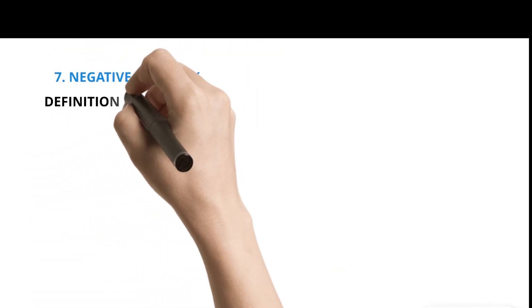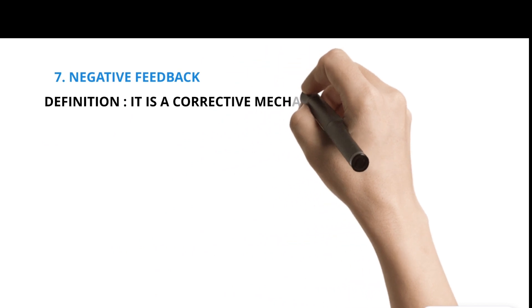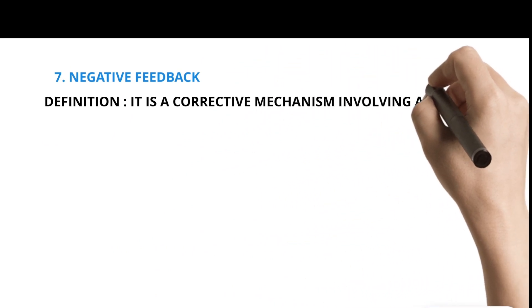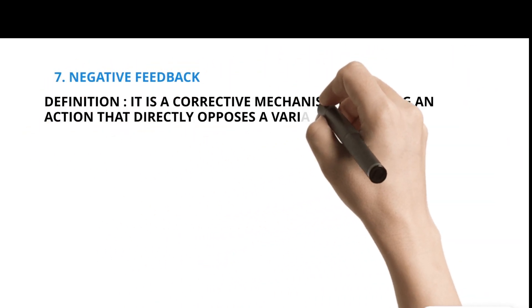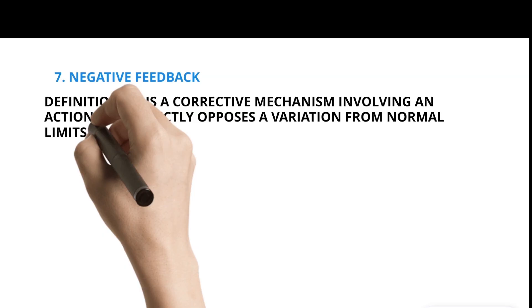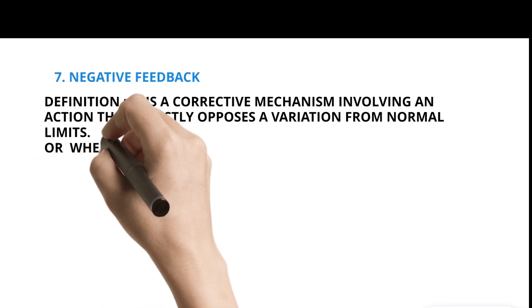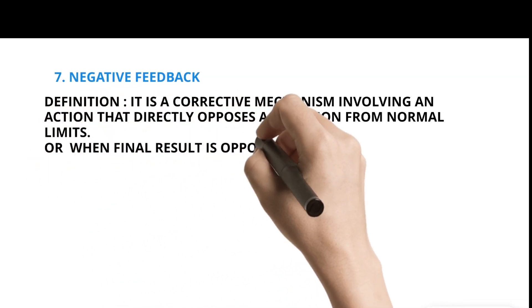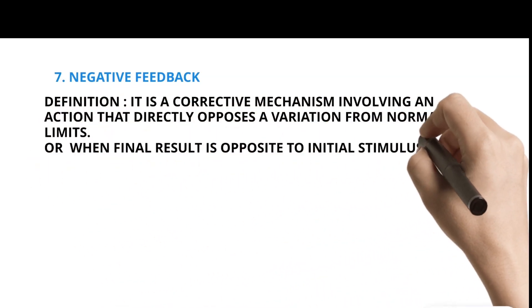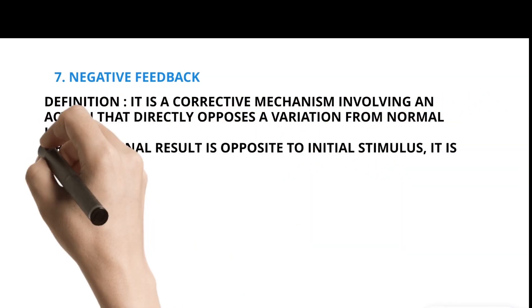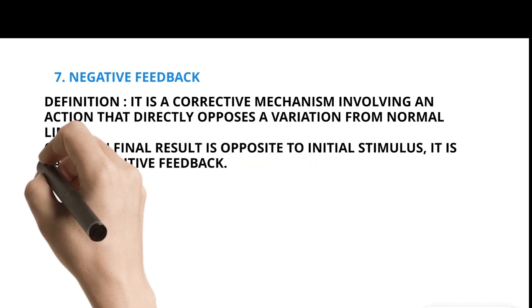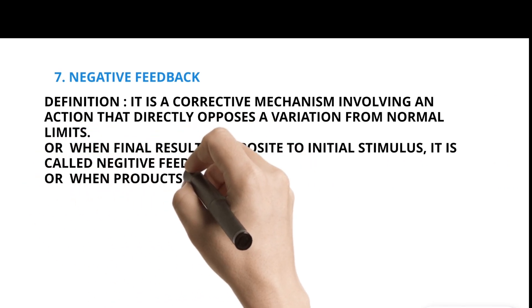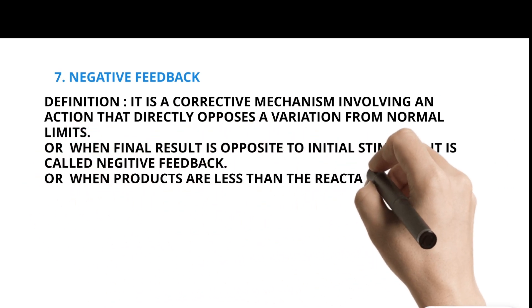Negative Feedback Definition: It is a corrective mechanism involving an action that directly opposes a variation from normal limits. Or, when the final result is opposite to the initial stimulus, it is called negative feedback. Or when products are less than the reactants.